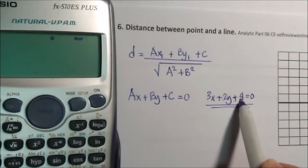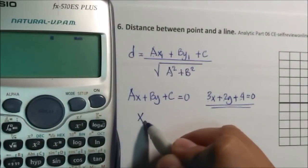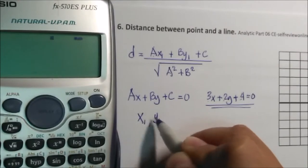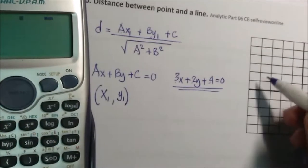Your A and B, your x₁ and y₁—this is the coordinate of the point. So if you have a line...